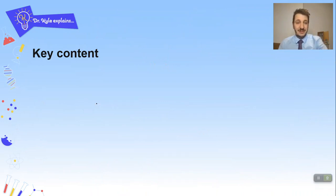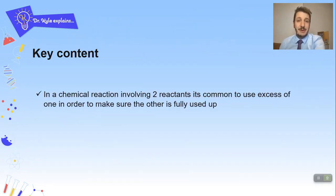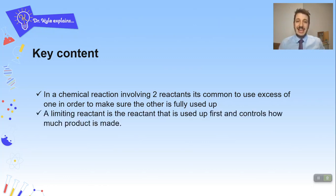Okay so some key content first of all. In a chemical reaction involving two reactants it is common to use an excess of one in order to make sure the other is fully used up. So a limiting reactant is the reactant that is used up first and controls how much product is made.